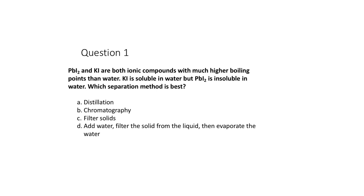Imagine the two compounds as a solid powder. What we can do is add water — the water will dissolve the KI but leave the PbI₂ as a solid. So we add water, then filter the solid from the liquid. The solid will be the insoluble PbI₂, and we'll have KI dissolved in water.